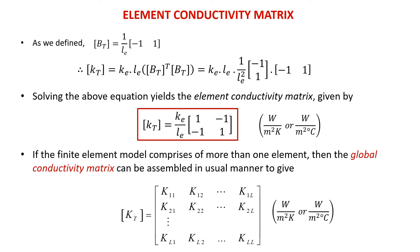Previously, we defined the matrix B. Next, we just need to substitute this value into the K matrix equation. By solving this equation, we can obtain our conductivity matrix as shown. If the final element model comprises more than one element, then the global conductivity matrix can be assembled in the usual manner to give the global conductivity matrix of the wall.